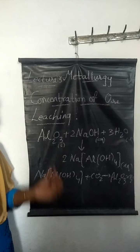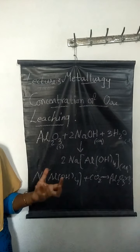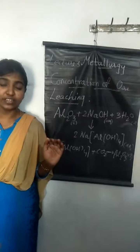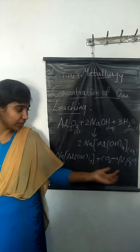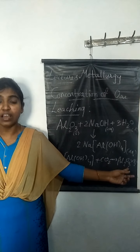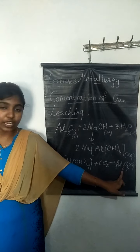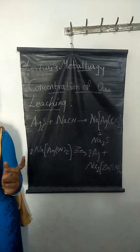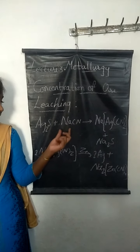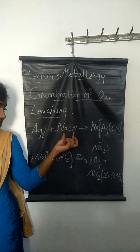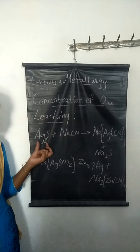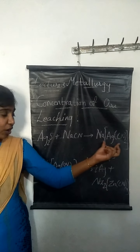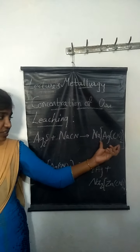Impurities like silicon dioxide (SiO2) and titanium dioxide are separated by this method, giving us the pure hydrated form of alumina, which on further heating yields Al2O3. Another example is leaching of silver and gold. For silver sulphide ore, sodium cyanide or potassium cyanide is used as the solvent. When silver sulphide ore is dissolved in NaCN, it forms a complex called sodium argentocyanide.